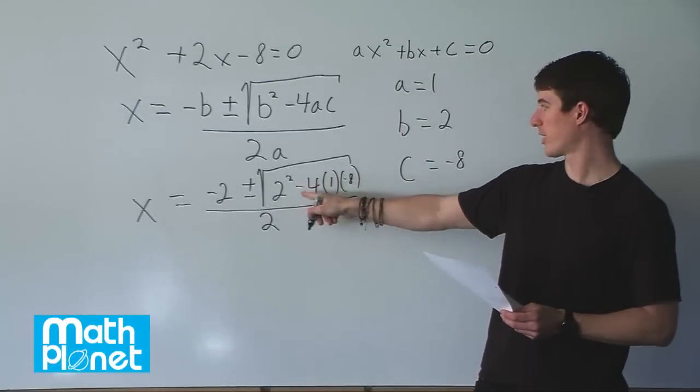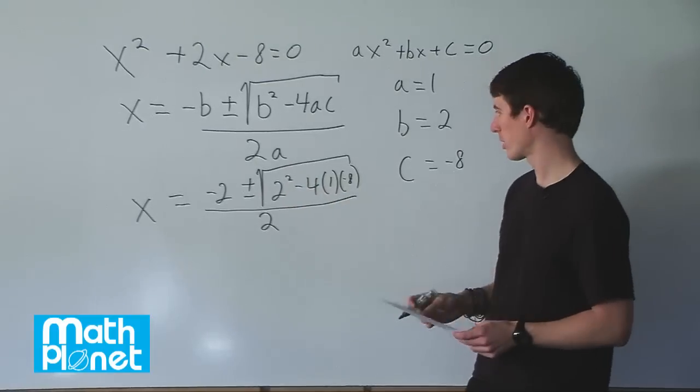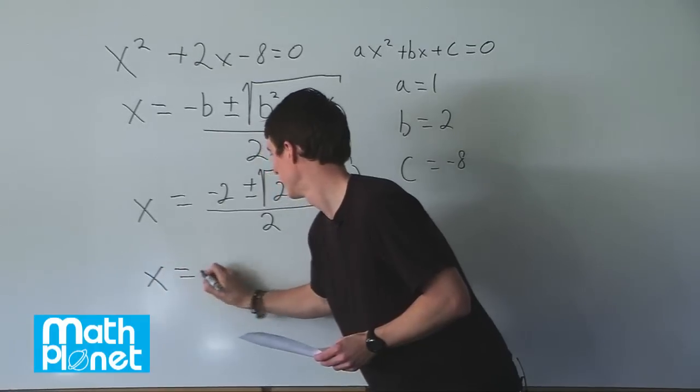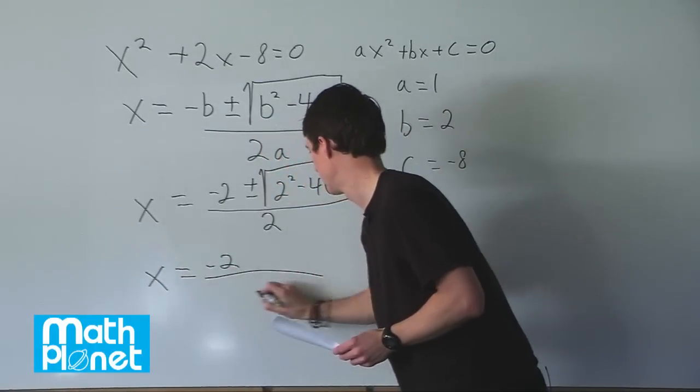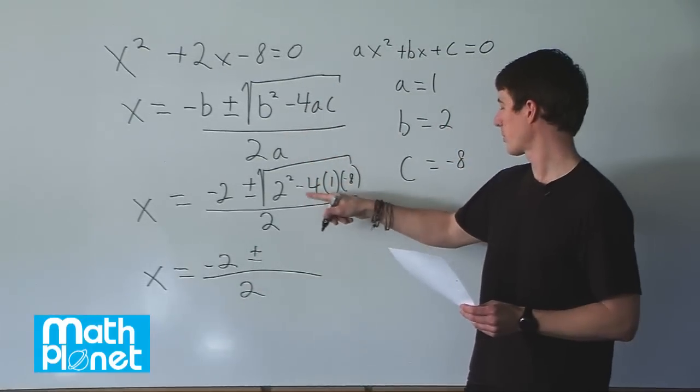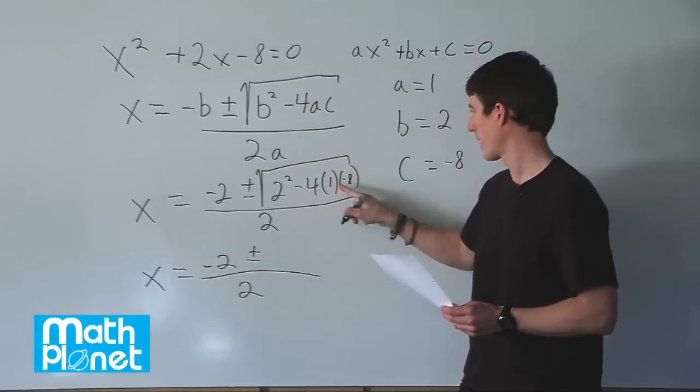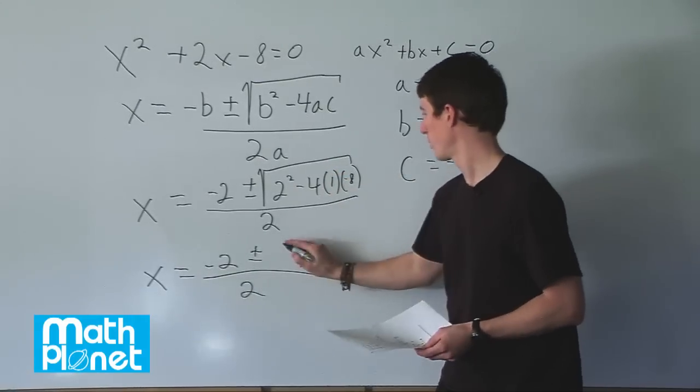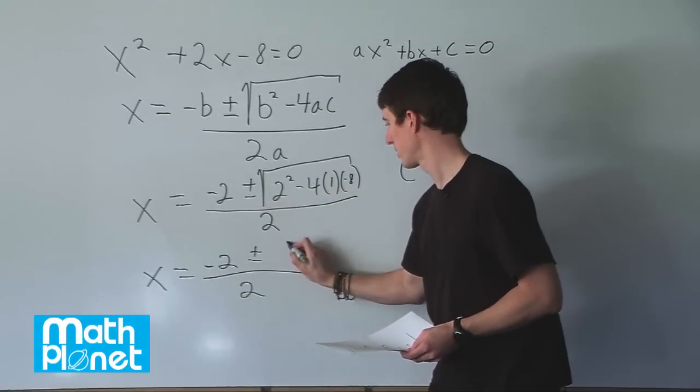So this simplifies to 2 squared, which is 4, minus 4 times 8, and that gives us 2 squared, which is 4, and then we have minus negative, which gives us the square root of 36, which is just plus or minus 6 here.